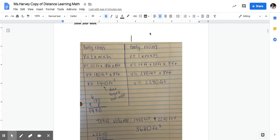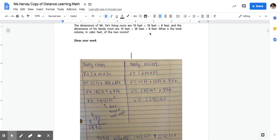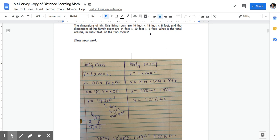So below you can see my work for this problem. Your work should be set up in a similar way so that it's staying organized and so that you can keep track of your answers. I know that there are two different rooms. I need to find the volume for each room before I can find the total volume of both rooms together.